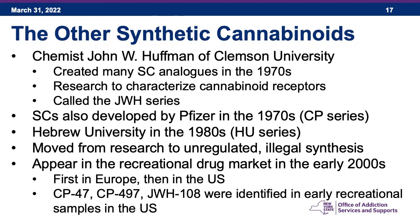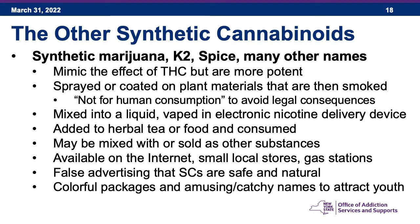Synthetic cannabinoids started appearing in recreational drug markets in the early 2000s — first in Europe, then jumping to the US. The chemicals resembling CP47,497 and JWH-018 were identified first in early recreational samples in the United States. When we speak about synthetic cannabinoids, we often use names like synthetic marijuana, K2, Spice, and many others.